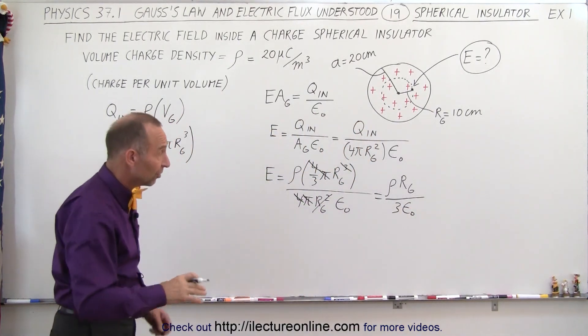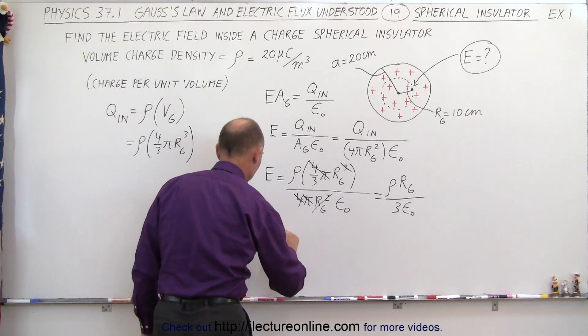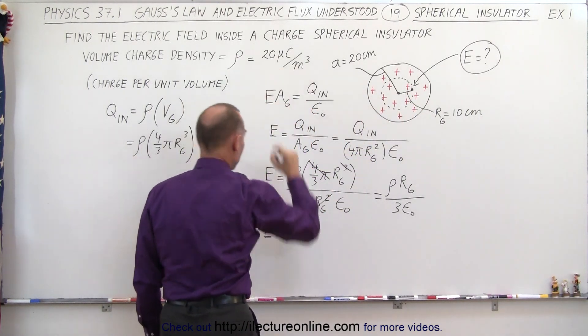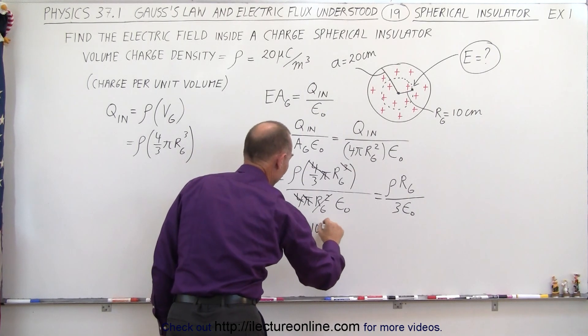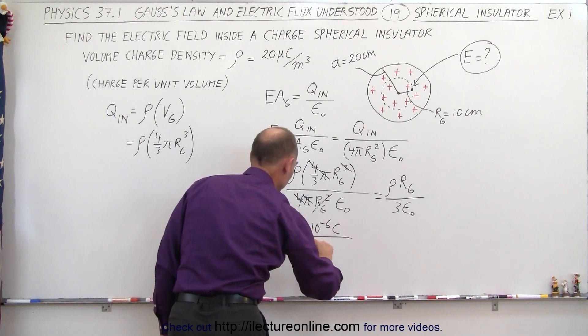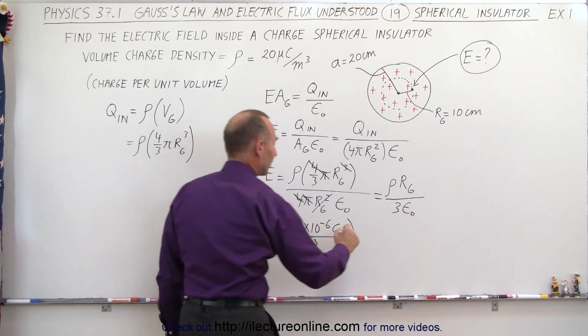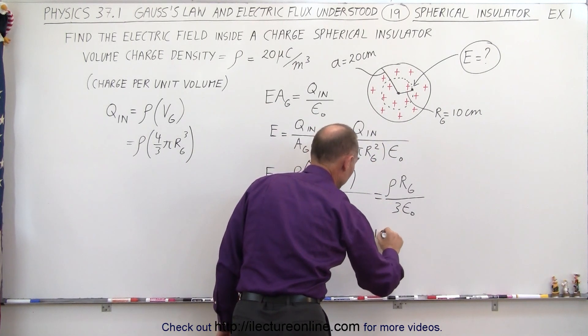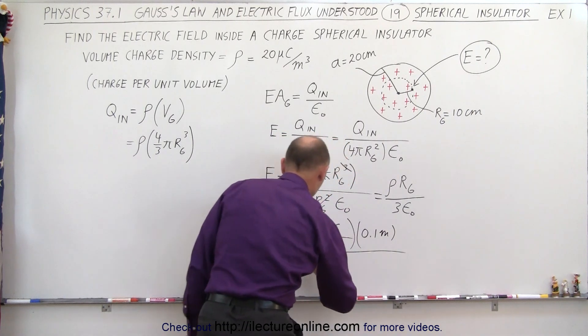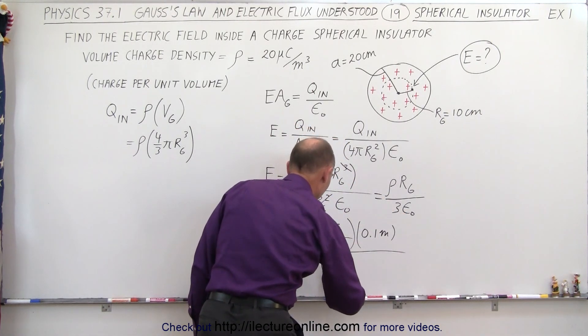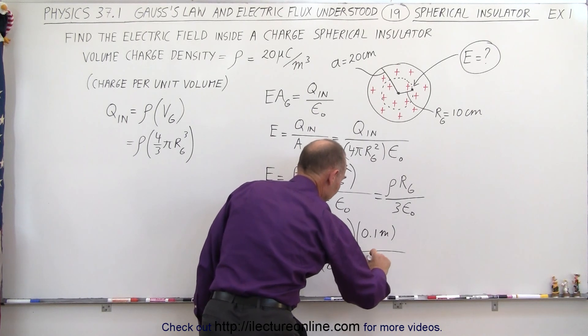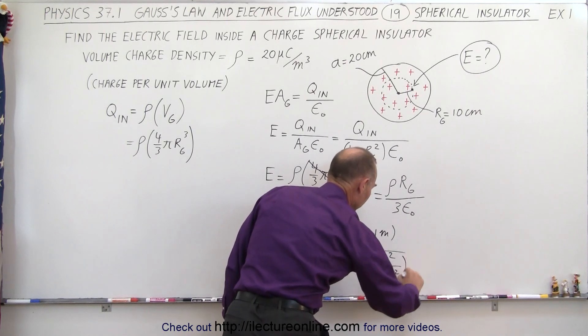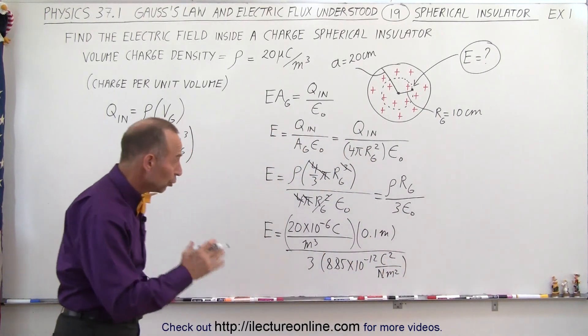So now we're ready to plug in some numbers. The strength of the electric field at that location, halfway between the center and the edge of the sphere, is equal to the density, which is 20 times 10 to the minus 6 coulombs per cubic meter, multiply that times the radius of the Gaussian surface converted to meters, 10 centimeters is 0.1 meter. Then we divide that by 3 and by epsilon sub naught, which is 8.85 times 10 to the minus 12 coulombs squared per newton meter squared.